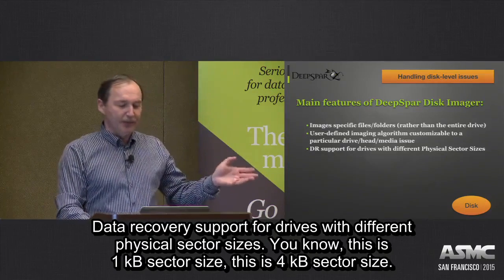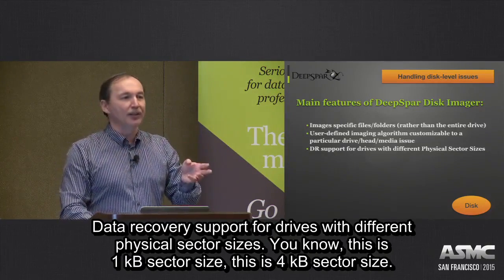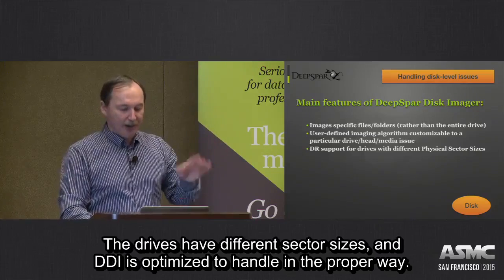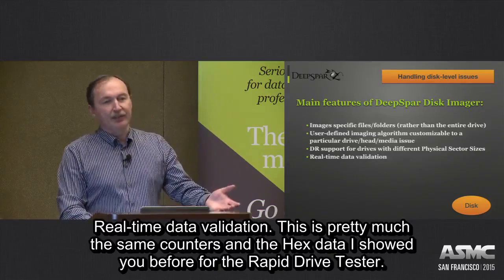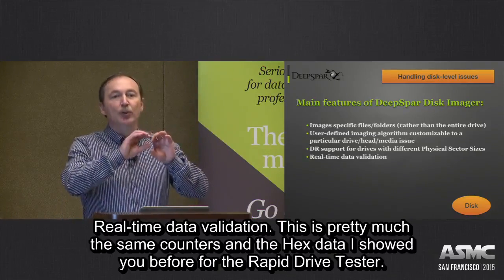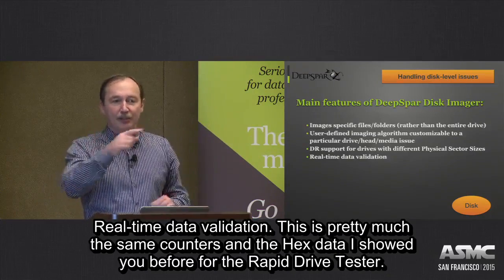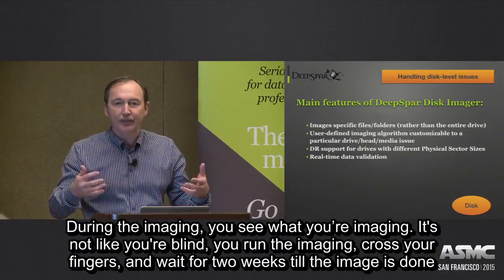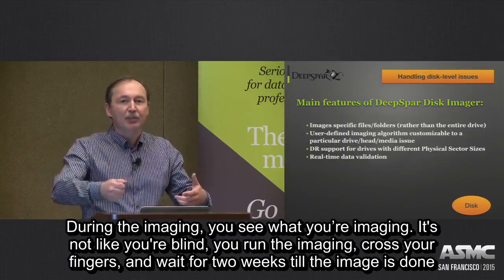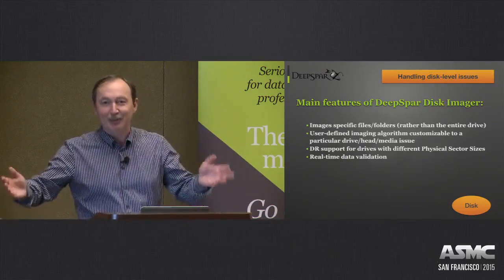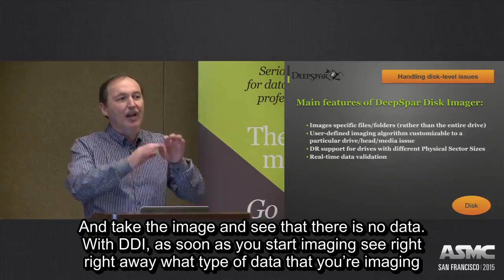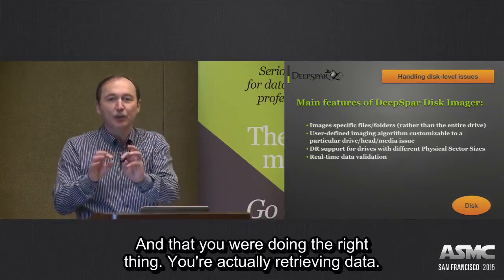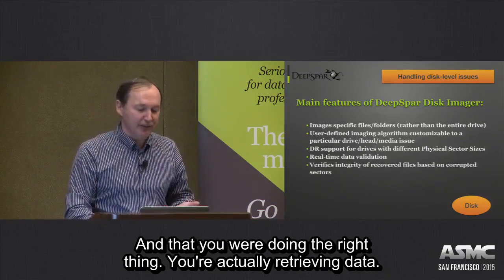Data recovery support for drives with different physical sector sizes — one kilobyte sector size, four kilobyte sector size, all those drives. They have different sector sizes, and DDI is optimized to handle this in a proper way. Real-time data validation shows you pretty much the same counters and hex data as the rapid drive tester. During the imaging, you see what you're imaging — it's not like you're blind, run the image, cross your fingers, wait two weeks until the image is done, and then find there's no data. In DDI, as soon as you start imaging, you see right away what type of data you are imaging, and confirm that you are doing the right thing and actually receiving data.